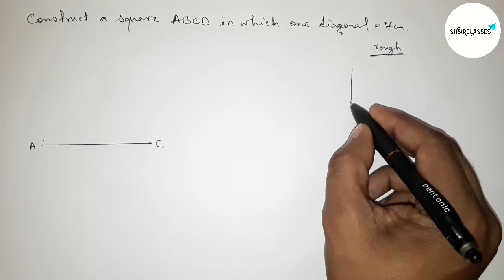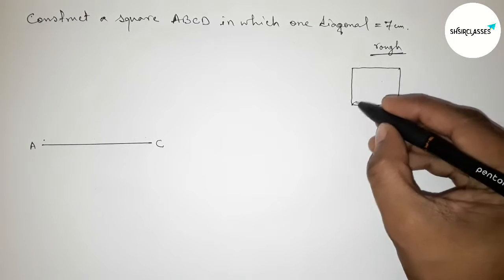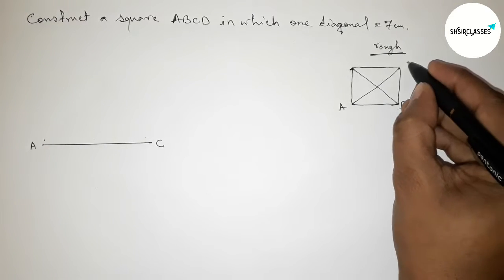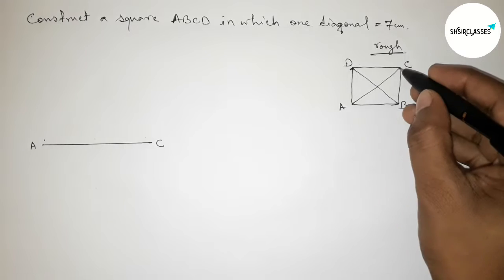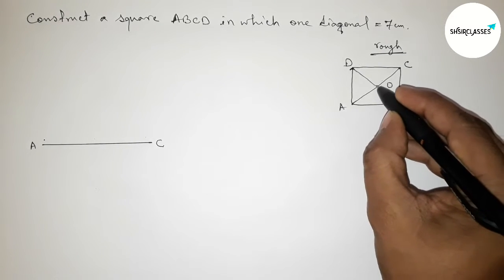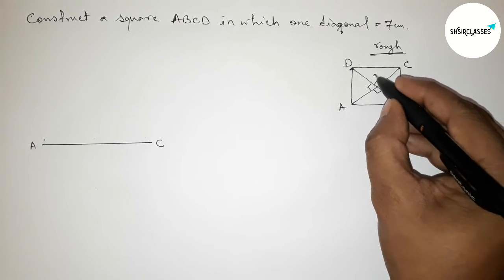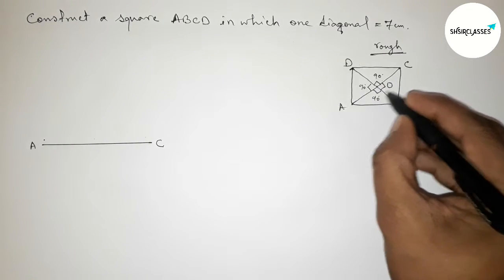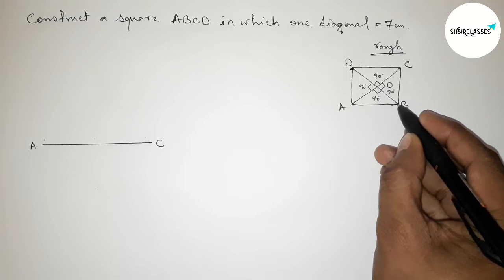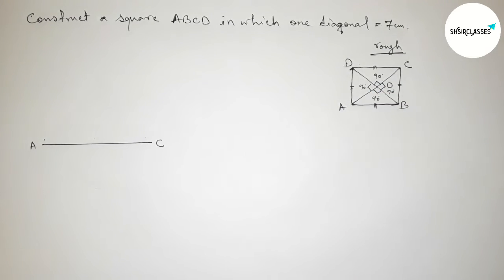Now roughly discussing some important properties about a square. First, roughly drawing a square and joining both diagonals. Taking vertices A, B, C, D — the two diagonals intersect and bisect each other at point O perpendicularly, meaning at 90 degrees. All angles at O must be 90 degrees. Also, all the sides of this square must be equal.